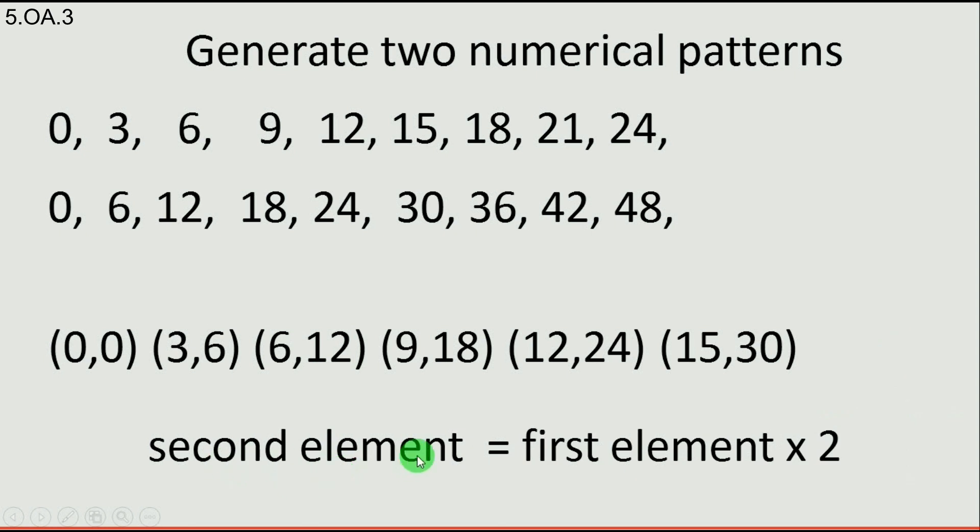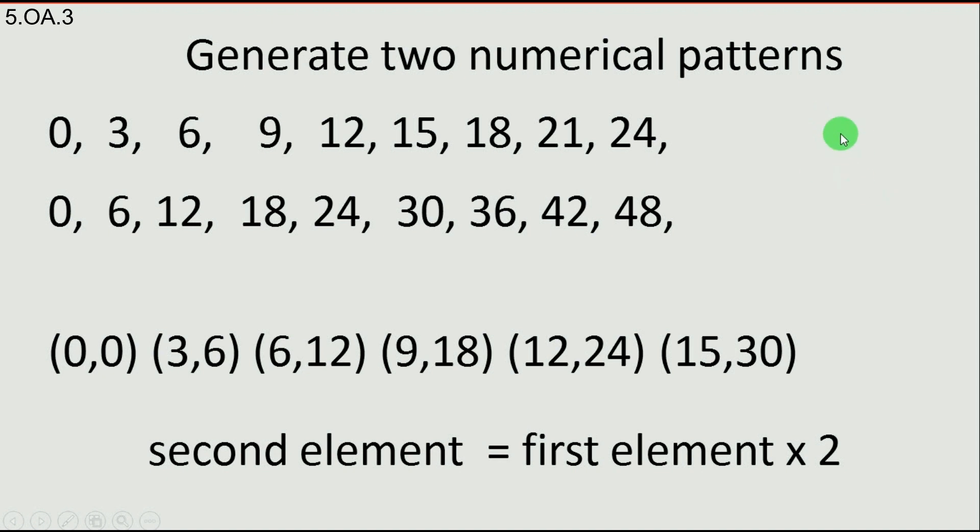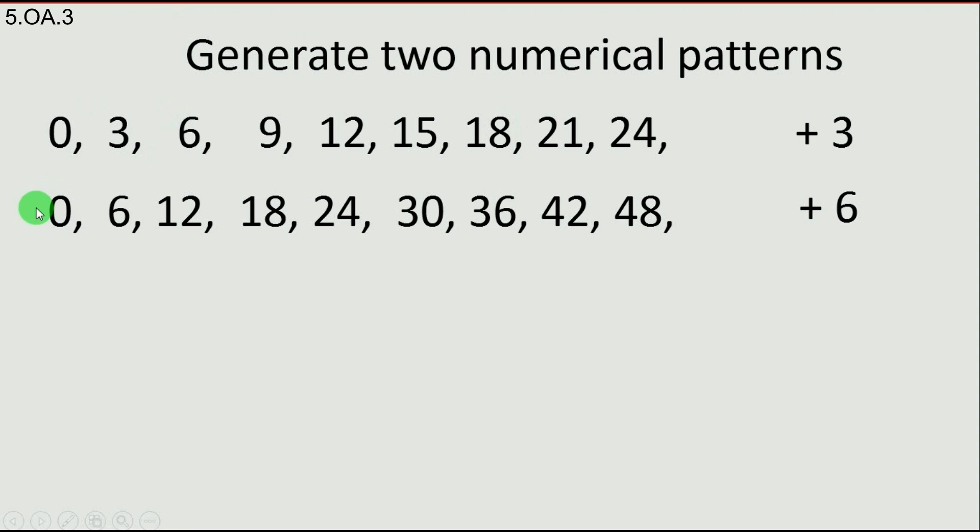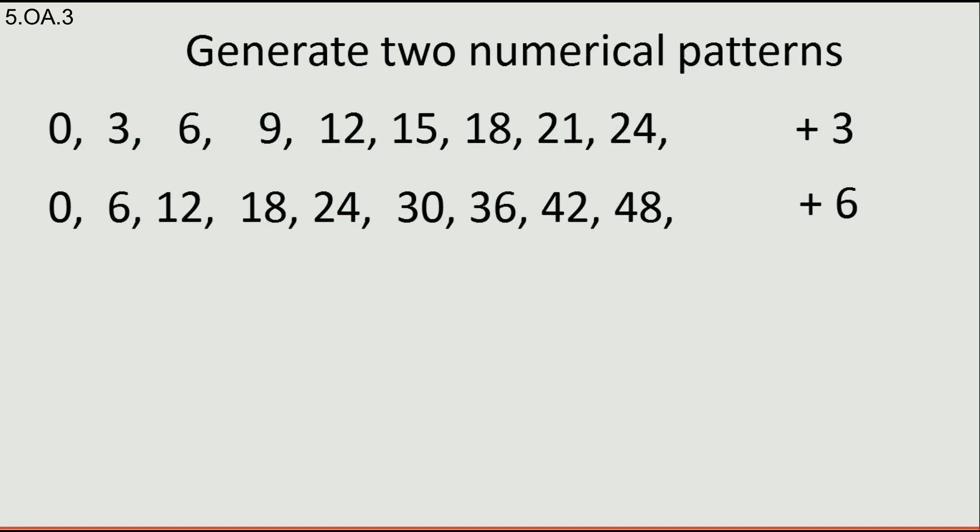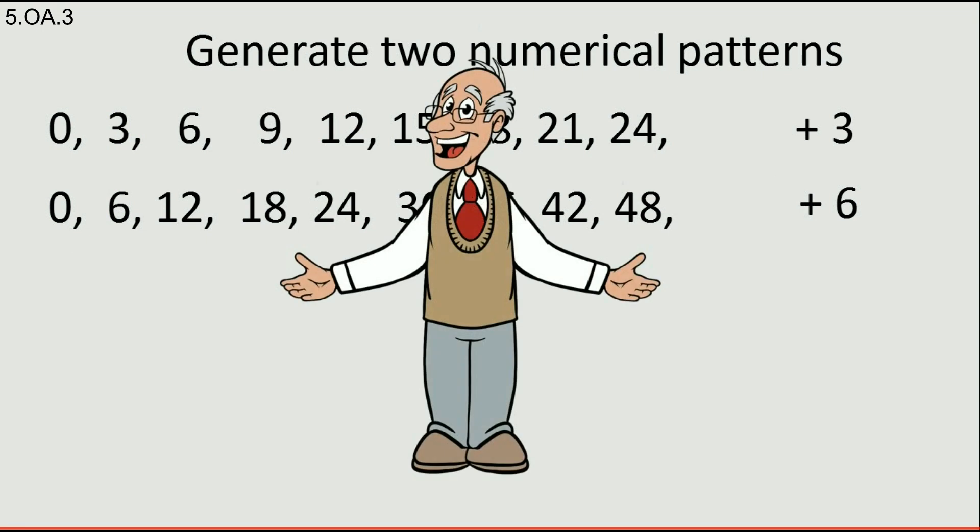Let's see why the second element equals first element times 2. First pattern rule is add 3. Second pattern rule is add 6. We always add double to the second pattern. Because we always add double to the second pattern, the numbers from the second pattern are doubles from the numbers in the first pattern. For example, 6 is double of 3, and 24 is double of 12. I think it's a simple but surprising fact about those patterns.